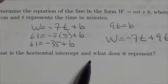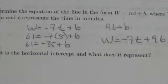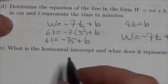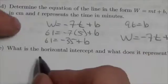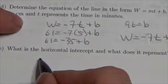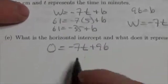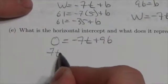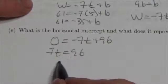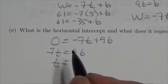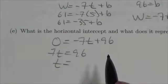What is the horizontal intercept and what does it represent? Okay, well the horizontal intercept is where the dependent variable is zero. So zero equals negative 7t plus 96. Bring that over, 7t is equal to 96, and then we'll divide.